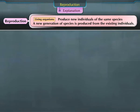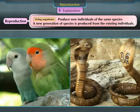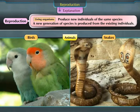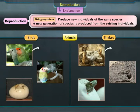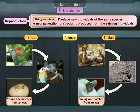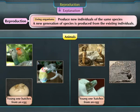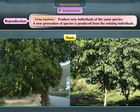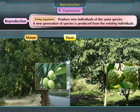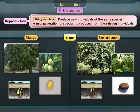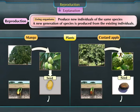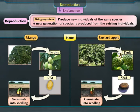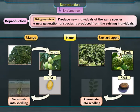For example, in the case of animals like birds and snakes, young ones hatch from eggs. In the case of plants like mango and custard apple, seeds from the fruit germinate into seedlings.